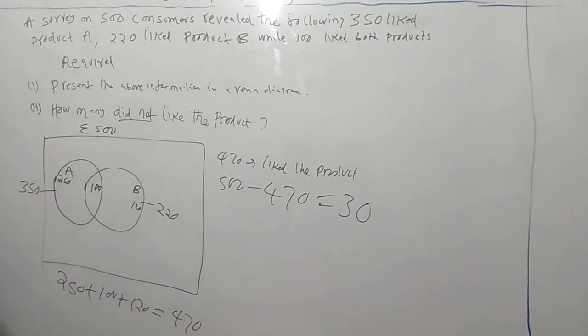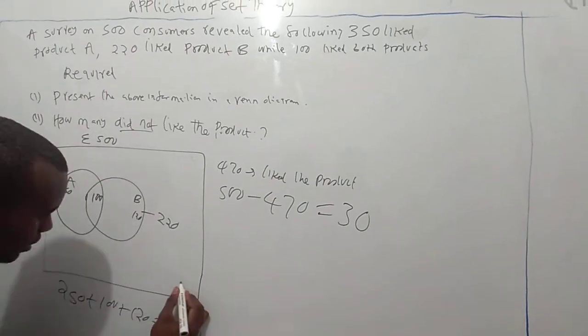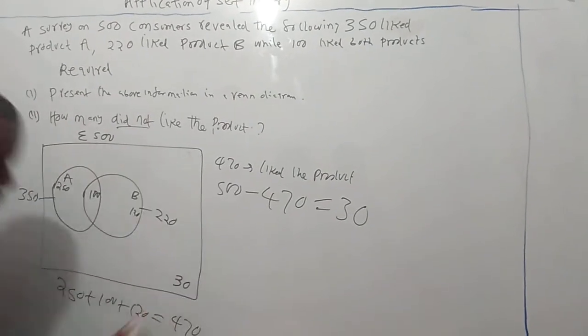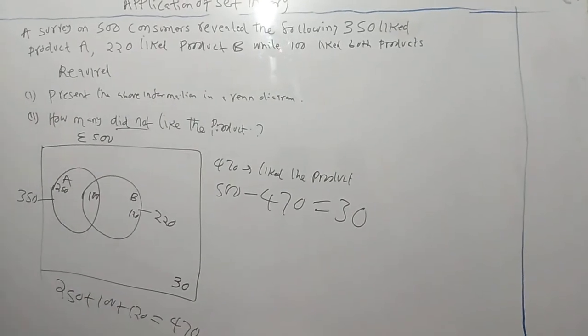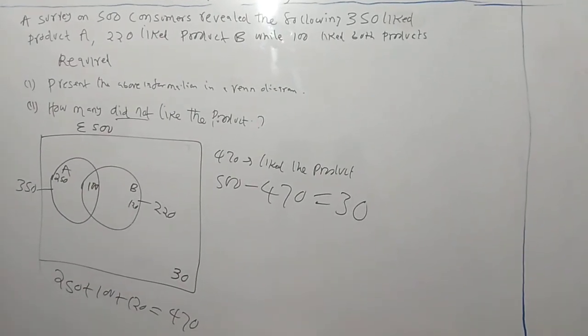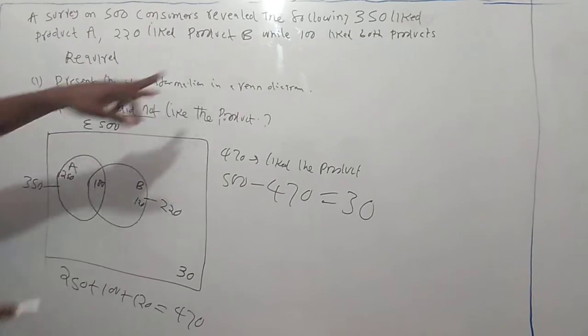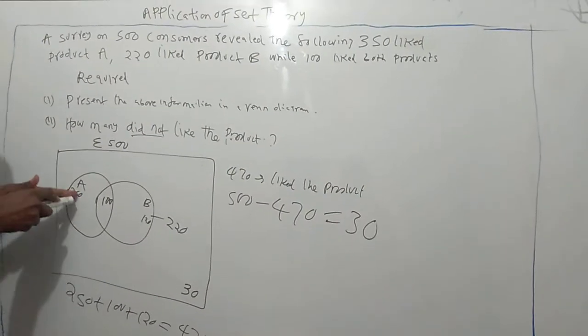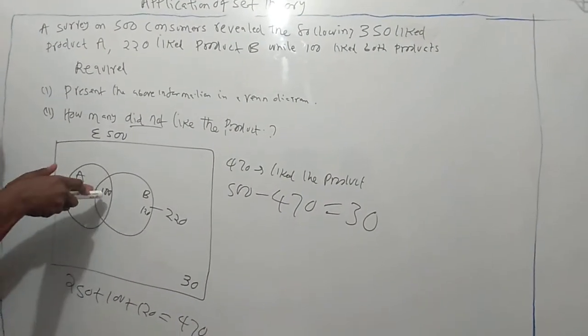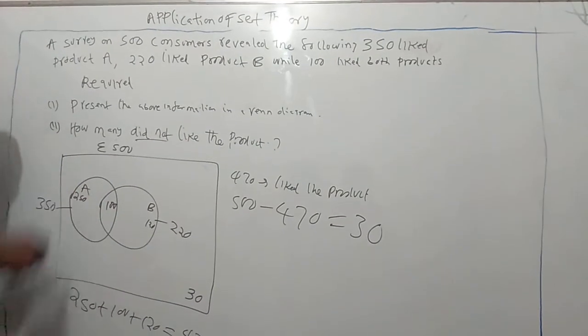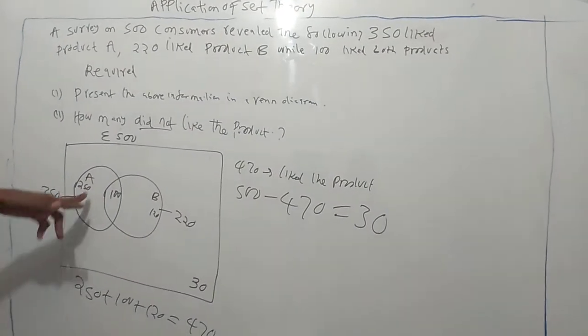So that is the one, normally the one we don't like, we represent them on bottom here. You can see here, 30. That is the solution to the problem. First of all, you have to know, this 350 is not the A only. It is the total of A, combining of the combined and the A only. That is what you have to know, that is strict here.